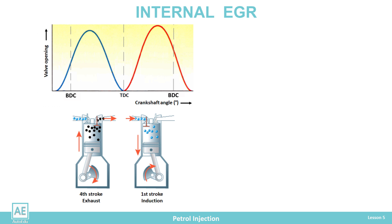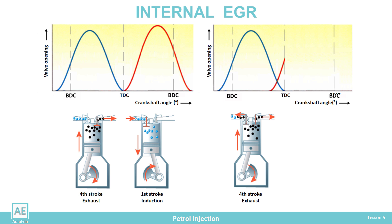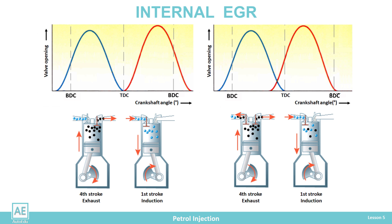When the partial load state occurs, conditions are created to start the internal EGR. The system rotates the intake cam to achieve an earlier opening of the intake valve at the end of the fourth stroke during inert gas discharge. In that case, the inert gas is diverted not only through the exhaust pipe but also into the intake manifold. At the end of the fourth stroke the exhaust valve closes, the piston moves to bottom dead center, and with the intake valve still open, first inert gas is sucked from the intake manifold, then the fresh mixture — achieving the appropriate amount of inert gas with the air-fuel mixture.